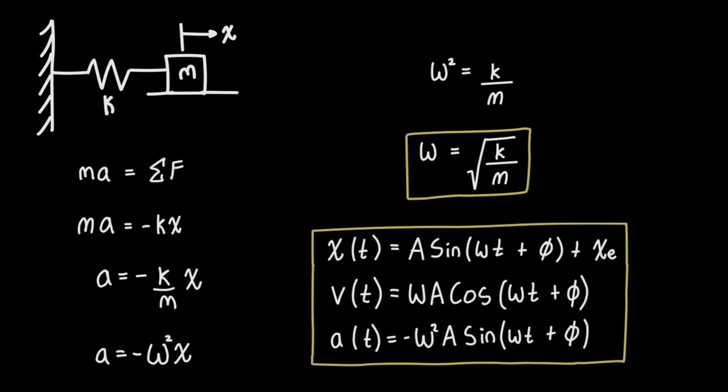If we solve this differential equation, we get an equation for our position as a function of time: x equals A sine(ωt + φ) plus x_e. A is the amplitude of the wave, omega is the angular frequency, phi is the phase shift, and x_e is the equilibrium position of the mass. Most of the time this is just going to be zero. If we take the derivative of this equation we get velocity, and take the derivative again we get acceleration.